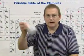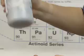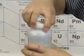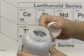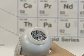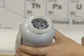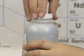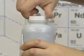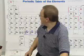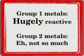Calcium isn't actually trapped under a liquid at all. It's a lot less reactive, so as long as you keep the bottle shut tight, it's going to be just fine. Group 1 metals are hugely reactive. Group 2 metals are reactive, but not as reactive.